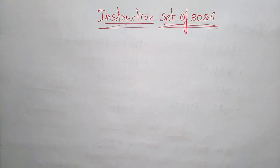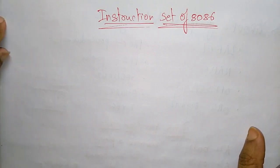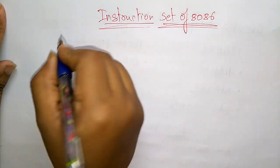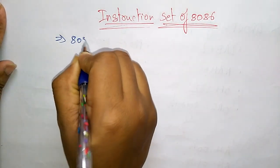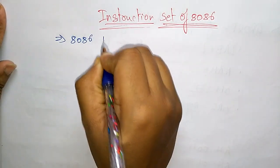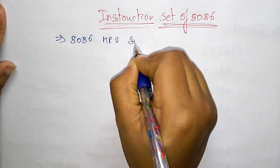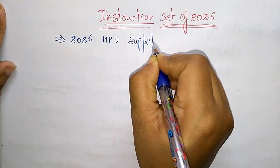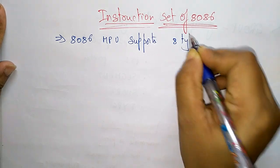Hi students, coming to the next topic: the instruction set of the 8086 microprocessor. The 8086 microprocessor supports a total of 8 types of instructions.